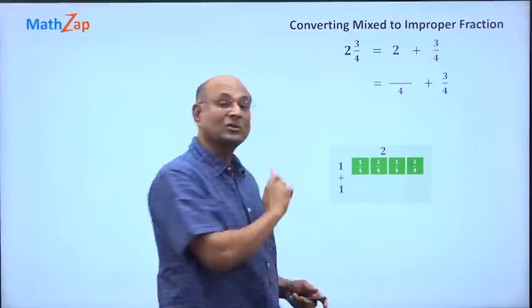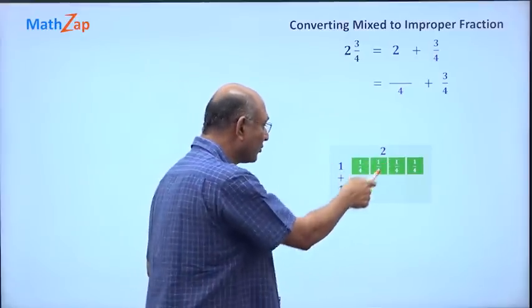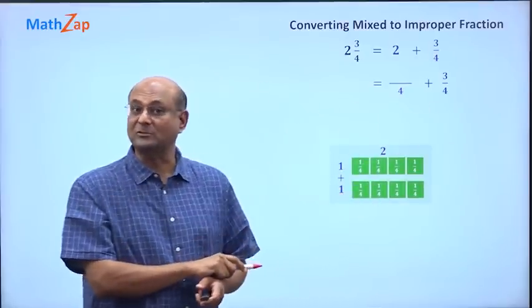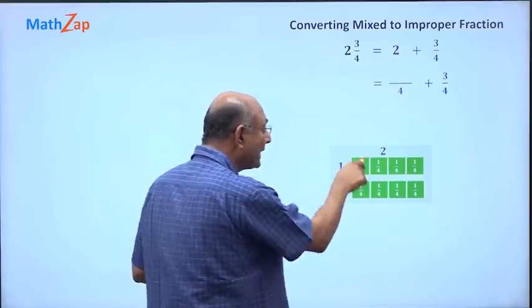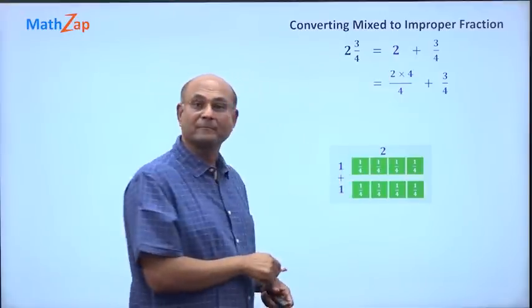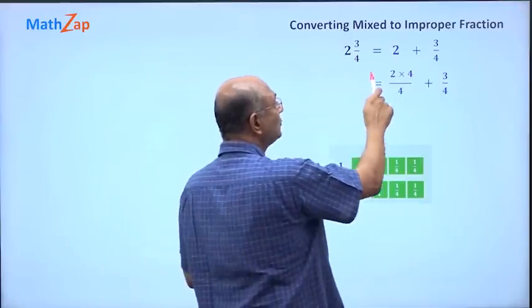Do you know how to write 1 as denominator 4? Yes, 4 pieces of 1 by 4, right? 4 by 4. So this 1 is also 4 pieces of 1 by 4, so 4 by 4.